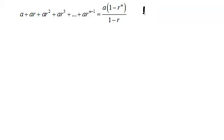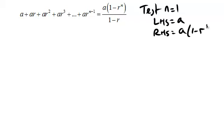So you test the first time you have to use that word. Test n equals 1. The left hand side is a. And the right hand side is a times 1 minus r to the 1 over 1 minus r. They're the same. So that's a valid test.